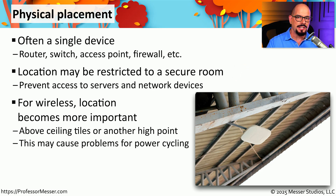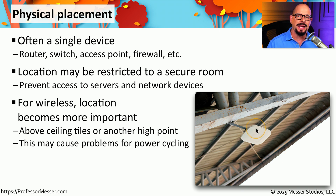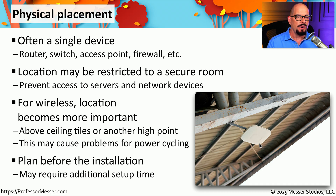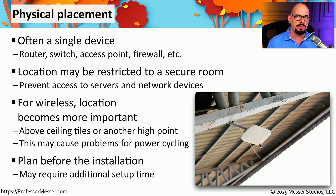If you have a single wireless access point, having the device where your ISP line comes in may not be the most convenient location. For access points, you'd like to get them high in the air and in a central location so that everybody has equal access to the signal. You also have to think about how you might reboot that device — if it has to be managed directly on the box, you may not want to put it too high out of reach. If you can plan out placement and run the appropriate cables, you might install it in a central location where everybody has easy access to the wireless network.